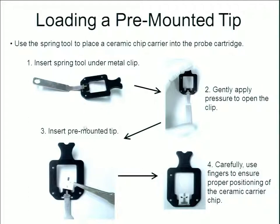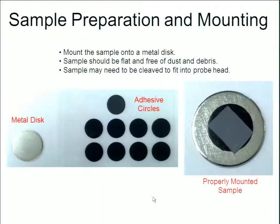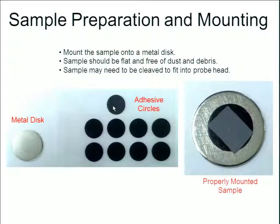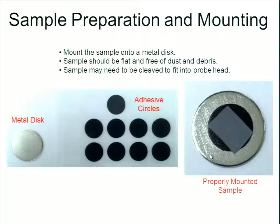To load the tip: use the spring tool to open the spring, insert your pre-mounted tip on the white chip carrier, and carefully clip it into place. Then take the whole probe cartridge and insert it into the probe head. For mounting a sample, use a small metal disc with double-sided carbon sticky tape, carefully press your sample onto the tape, and place the disc on top of the piezoelectric scanner.